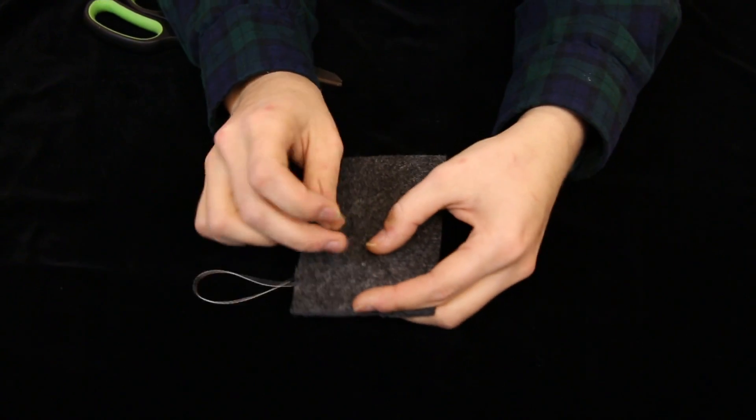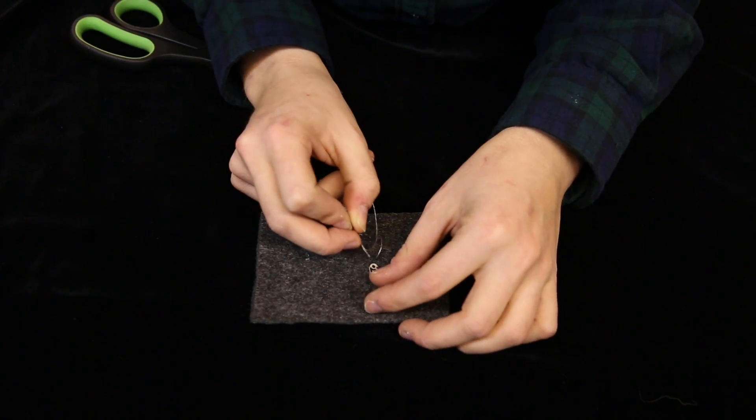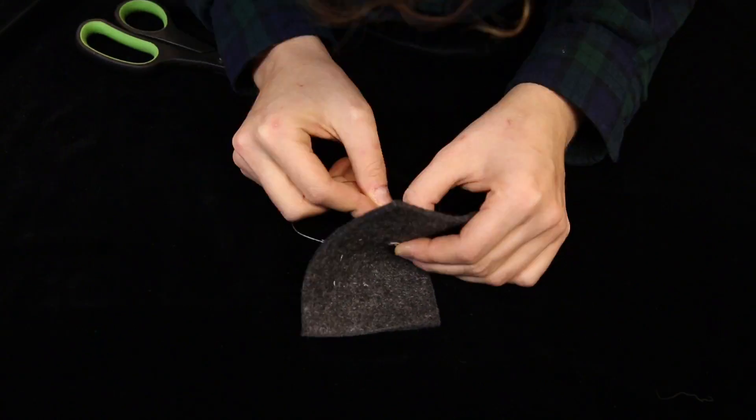Use the running stitch to connect it to the cathode of a lily pad sewable LED and tie it off.